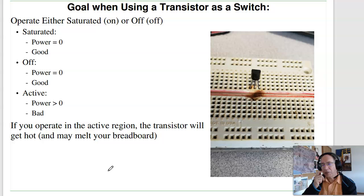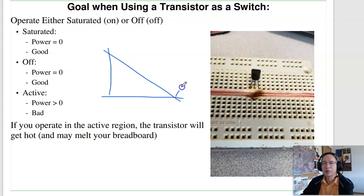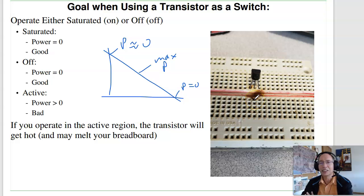It's important to saturate your transistor. You might have seen this in the labs: if you see a breadboard with a little melt spot on it, that means the transistor was in the active region. If I'm at cutoff, power equals zero; if I'm saturated, power is almost zero. Right in the middle — at maximum power — is bad. The transistor gets hot, and these little 3904s don't have any way to dissipate heat. If you're putting a lot of power through them, they'll melt the circuit board. You want to either be off or saturated.